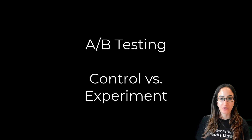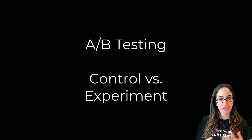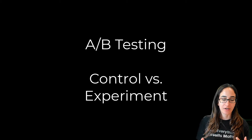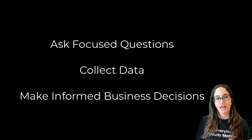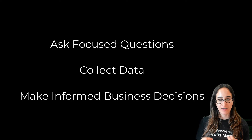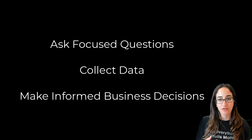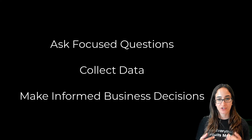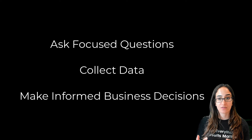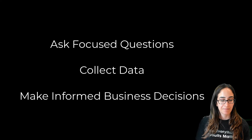A-B testing is when you compare two versions of a web page or app to determine which one performs better. When you run an A-B test, you compare the current experience against a variation. This lets you ask focused questions about your proposed changes, collect data about the impact of that change, and then make business decisions based on that data.